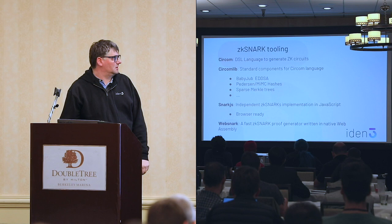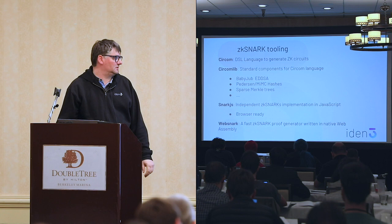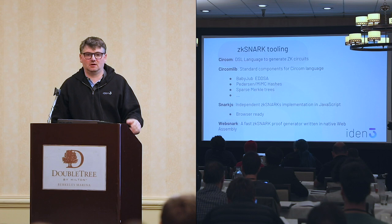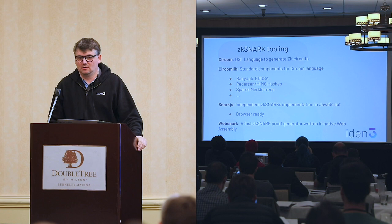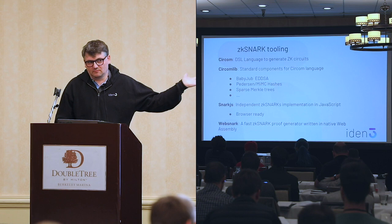Then we have snark.js, which is an independent implementation of the libSNARKs protocol. And today we just launched something new: a ZKSNARKs proof generator that runs from the browser, written in WebAssembly by hand. It's quite fast — right now, creating proofs from the browser, a 5K constraint circuit takes less than 10 seconds. We just released it today, so if anybody wants to test it, that's great.